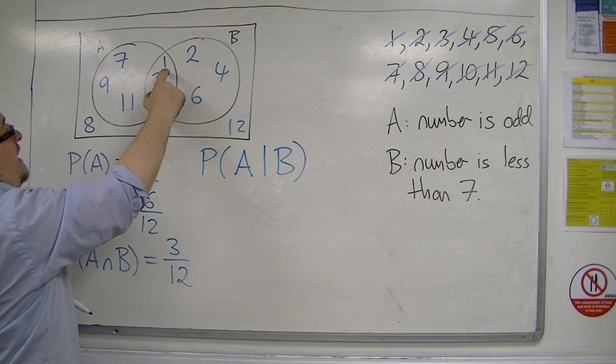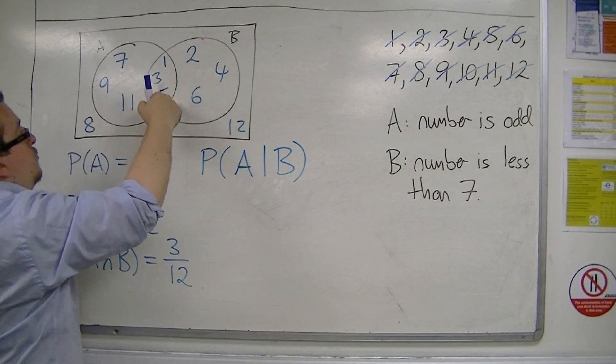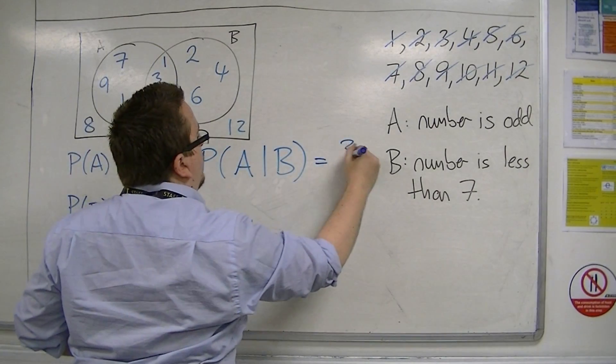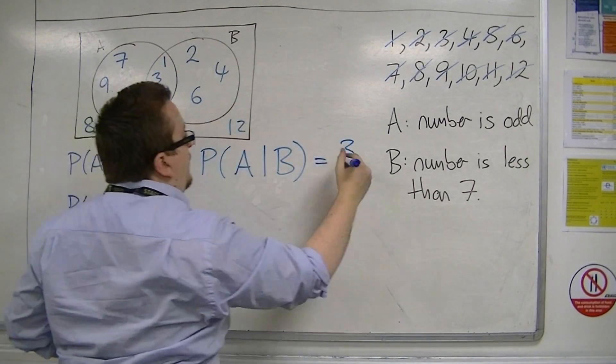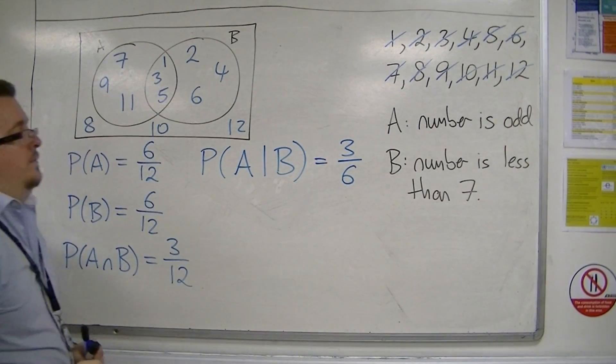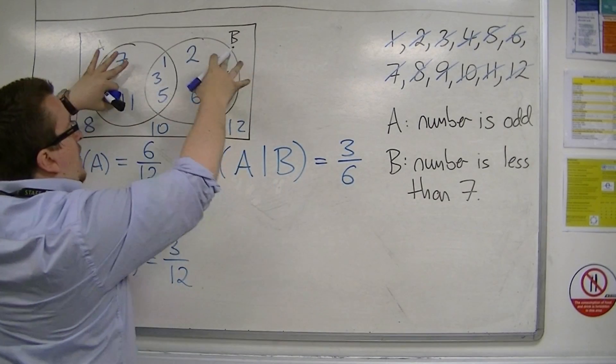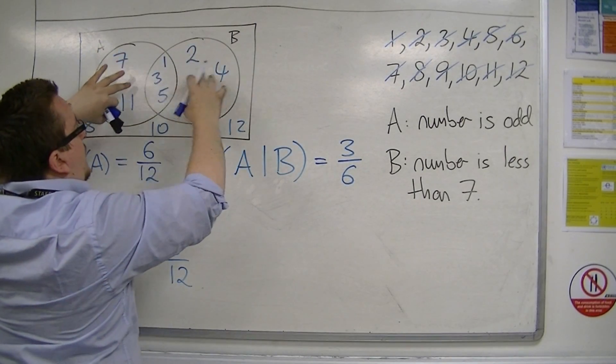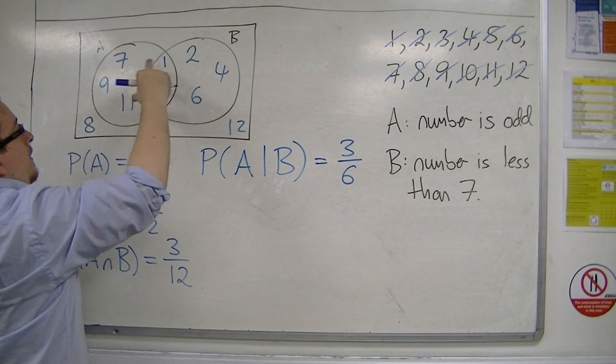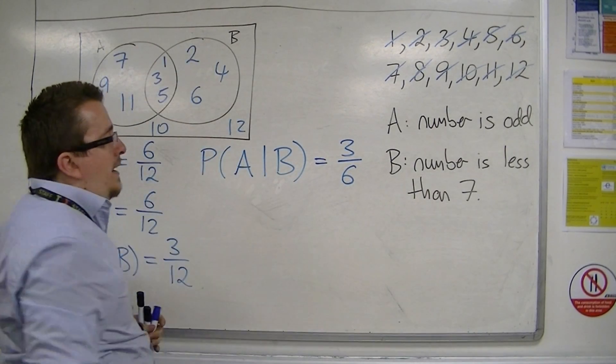Well, that is the intersection. It's 3 out of a possible 6. Okay, so you look at just B and select the ones that are A's, the 3 out of the 6.